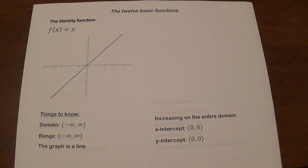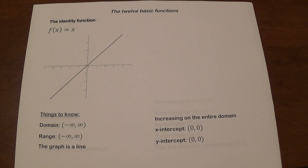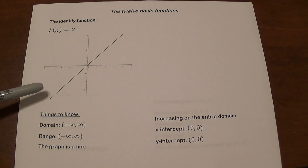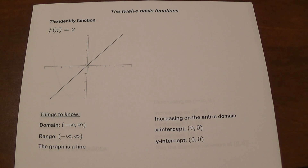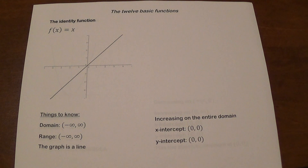The first one is the identity function, f of x equals x. So whatever x is, the y is going to be the same exact value, so it's a line. The domain of this function is all real numbers, and so is the range. This function is increasing all the time, and its x-intercept and y-intercept are at the origin.